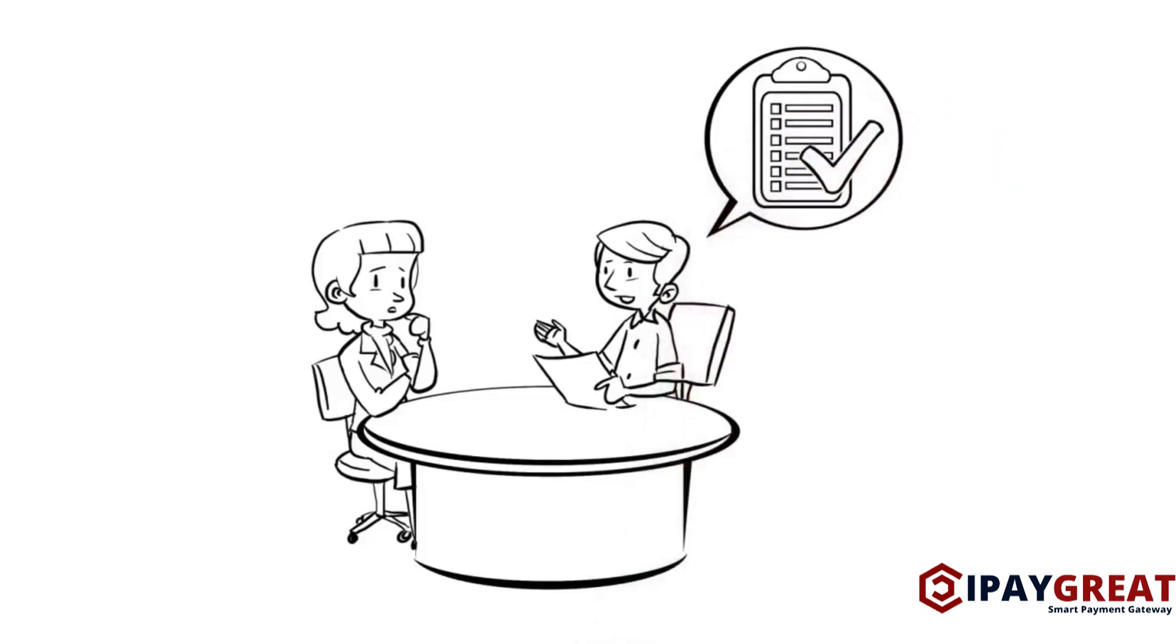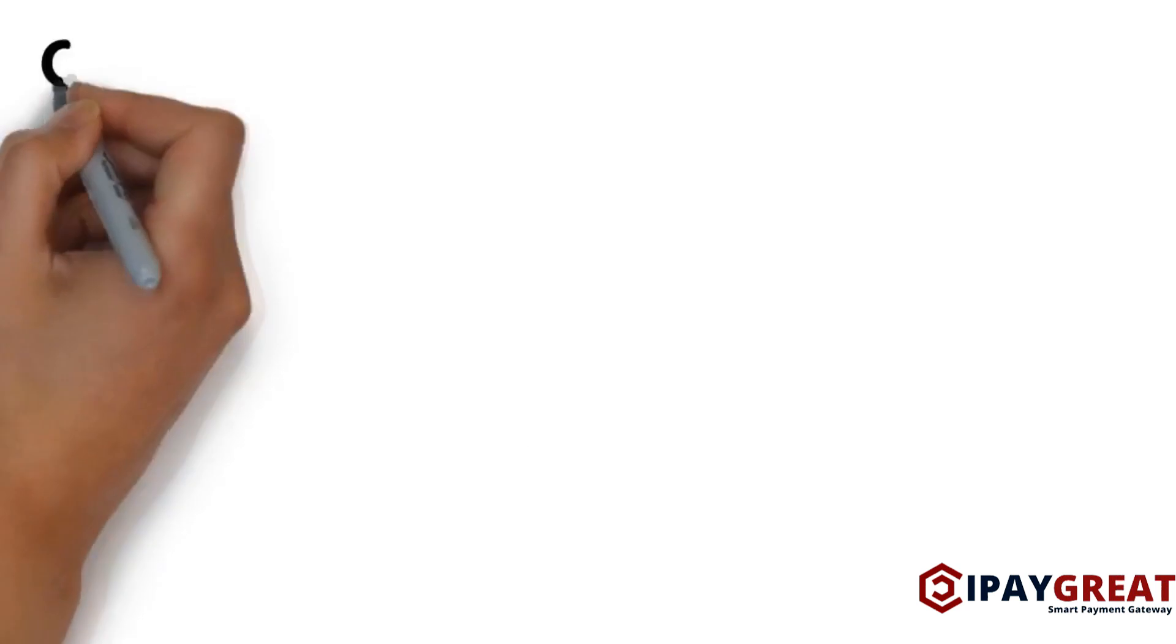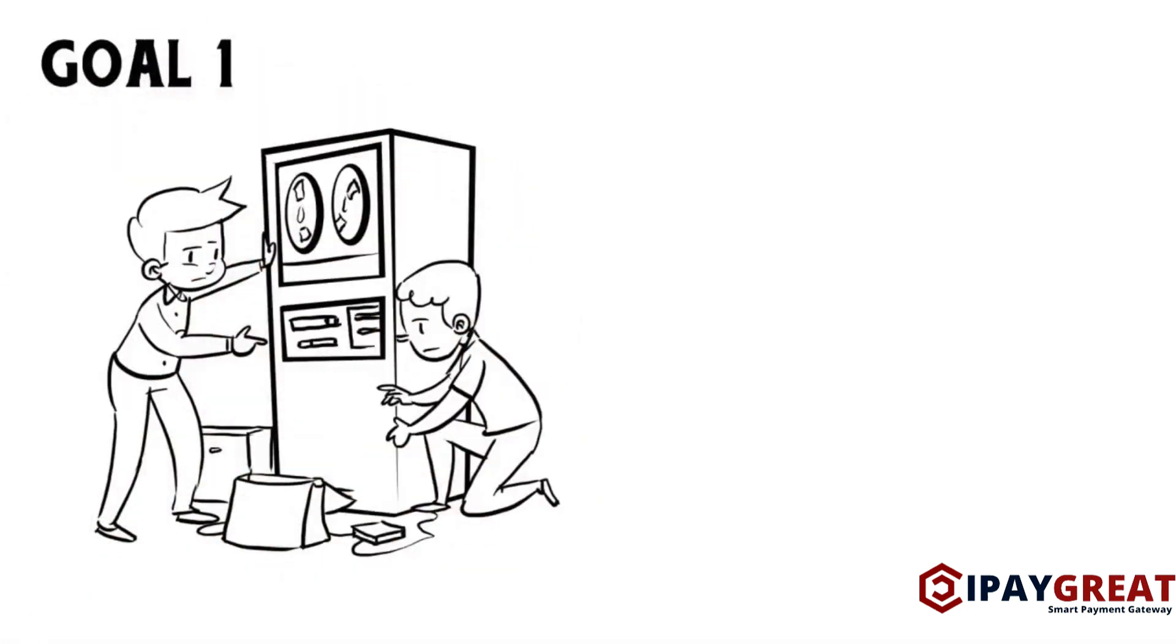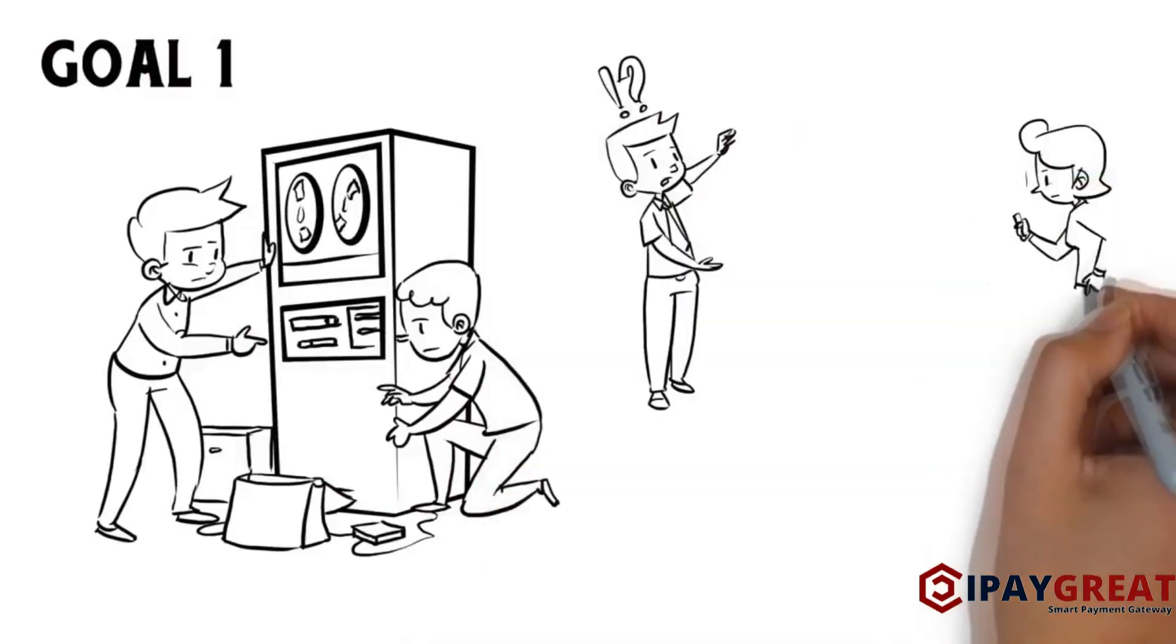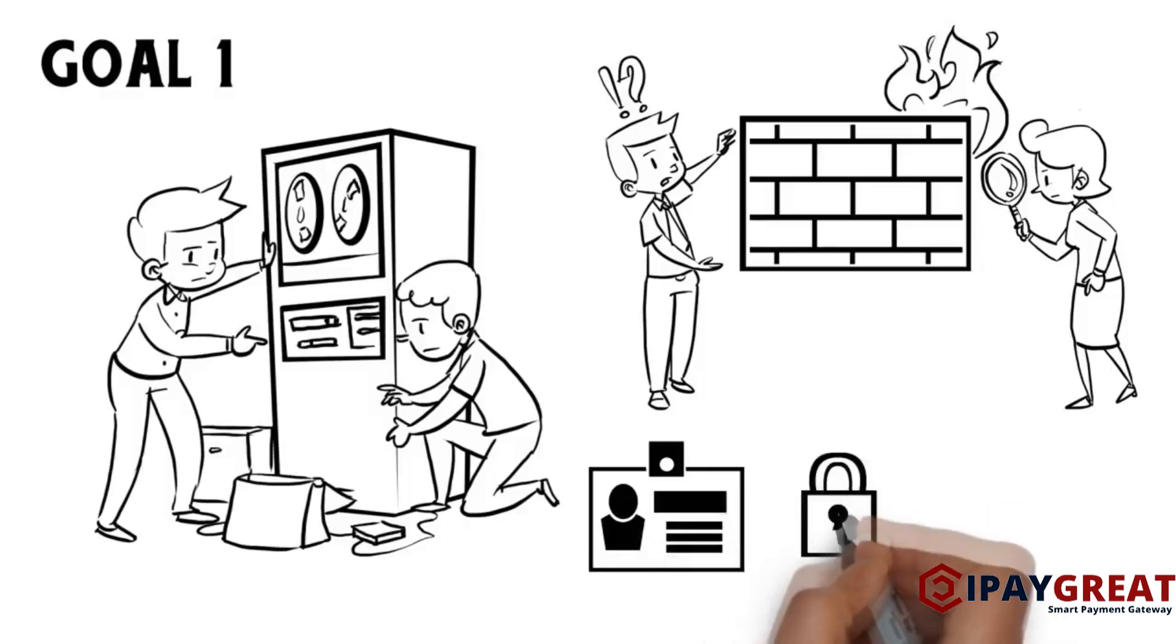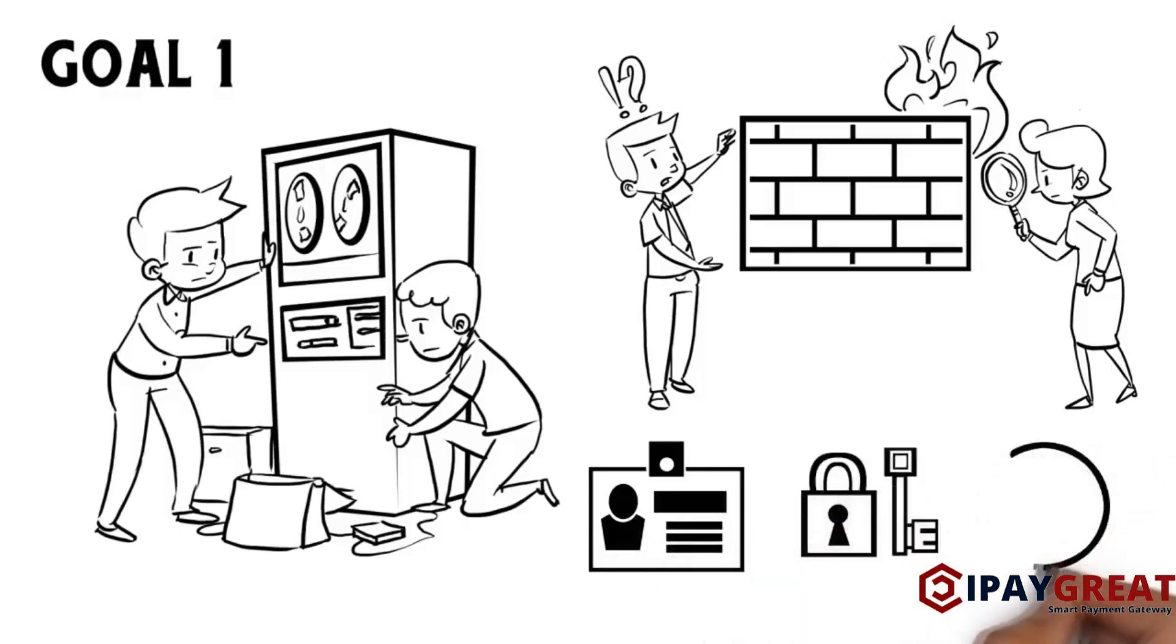A summary of some of the most essential requirements include Goal 1: build and maintain a secure network and systems. Implement and maintain properly configured firewalls and change default system user IDs and passwords. Implement and enforce comprehensive security configuration standards.